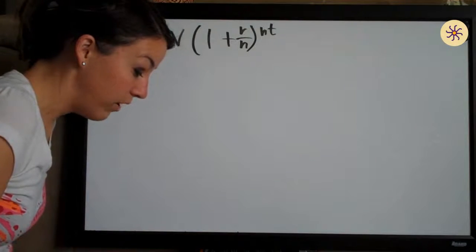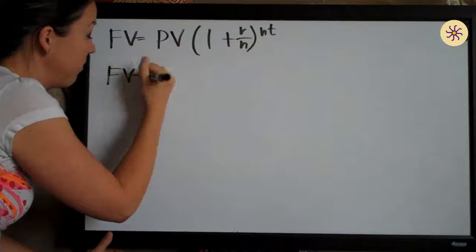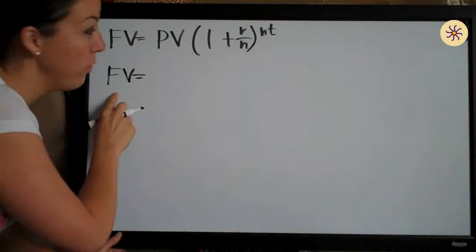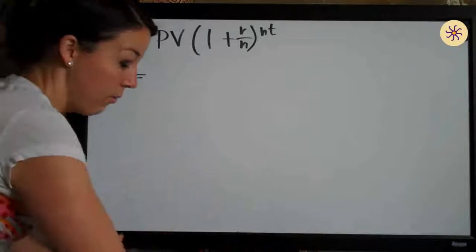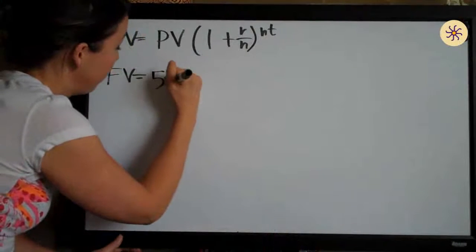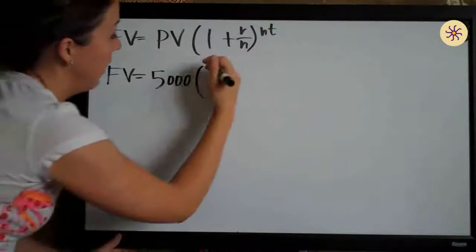So this question asks us to find the future value of $5,000, and because it's asking us to find future value of a certain amount of money, we have future value here on the left by itself. We're finding the value of $5,000, so that is our present value. We leave the one.